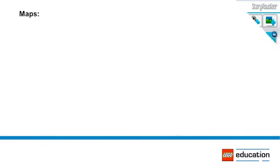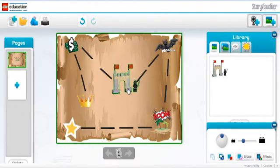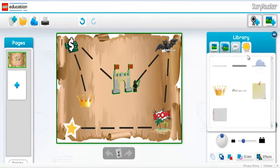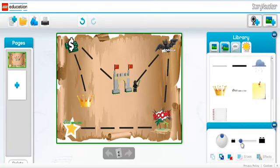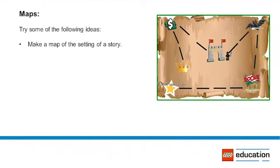Maps: Maps communicate information about location and distance. Stylized maps can be used to visualize regional information such as altitude, weather patterns, or demographics. Try some of the following ideas: Have students make a map of the setting of a story, a map of their home or bedroom, or a map of their school or classroom.